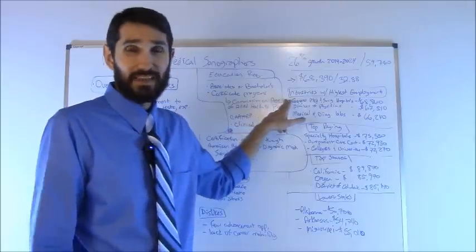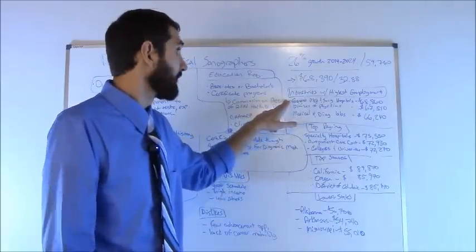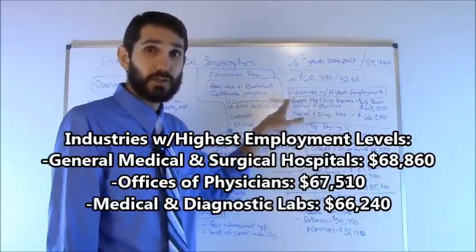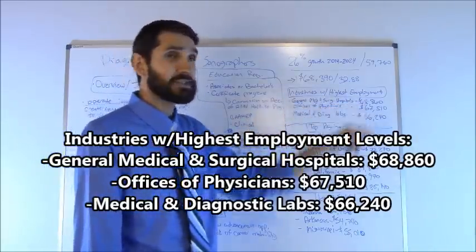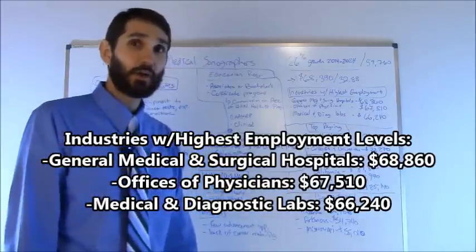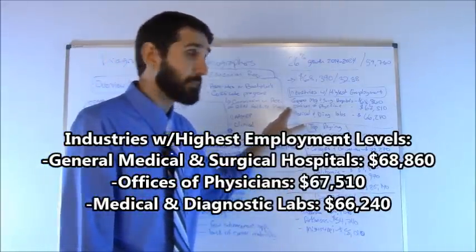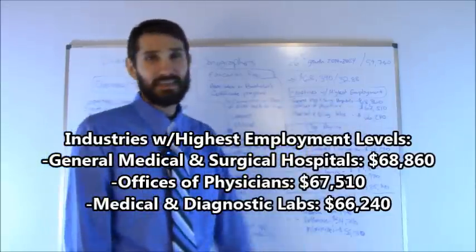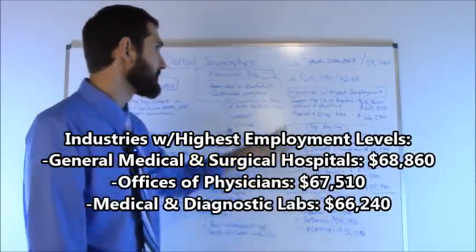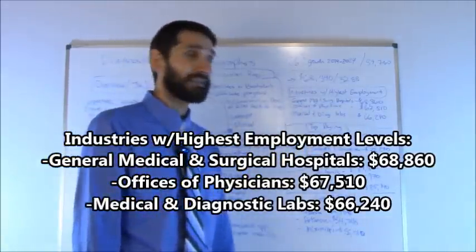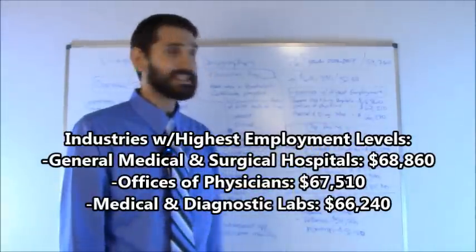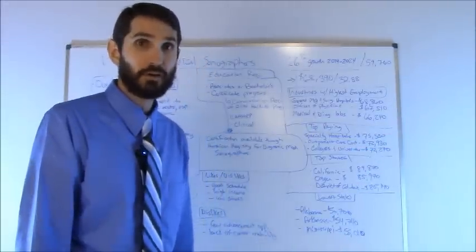First of all, what industries had the highest level of employment? Well, number one was general medical and surgical hospitals. The average salary there was $68,860. Offices of physicians came in at number two, $67,510 was the average there. And medical and diagnostic laboratories came in at number three, $66,240 was the average there.